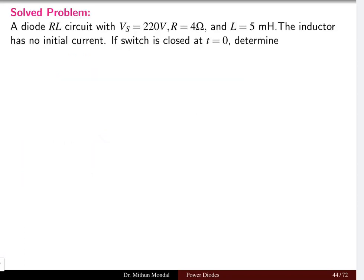Let us solve one problem involving the RL network with a diode. The source voltage is 220 volts and this is a DC source. The resistor value is 4 ohms and the inductor value is 5 millihenry. The inductor has no initial current. If the switch is closed at time t equal to zero, determine the steady state diode current.